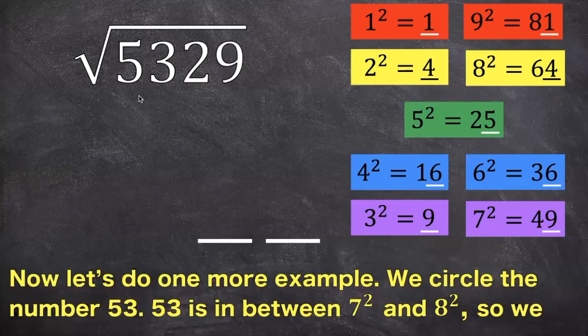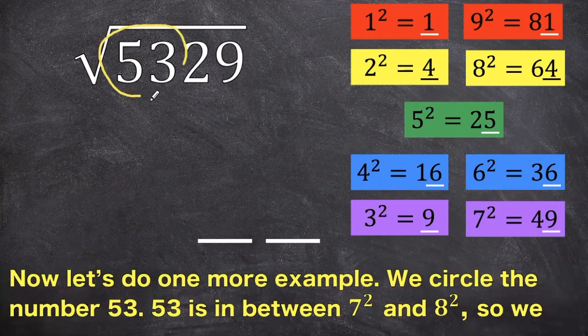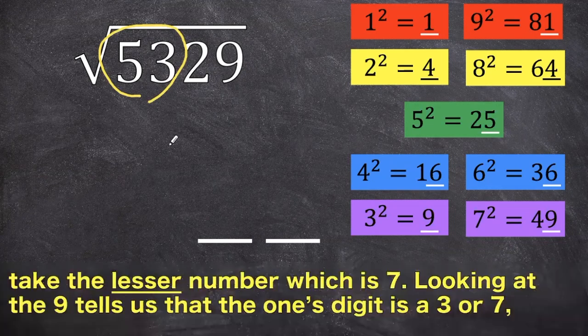Now let's do one more example. We circle the number 53. 53 is in between 7 squared, which is 49, and 8 squared, which is 64, so we take the lesser of the number, which is 7.